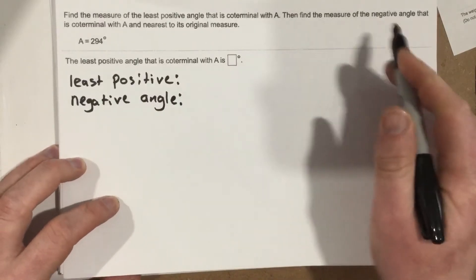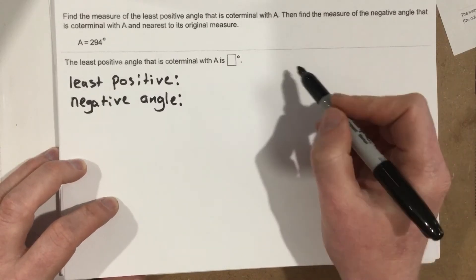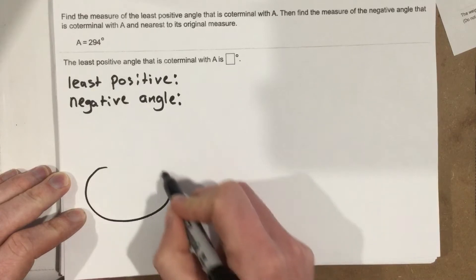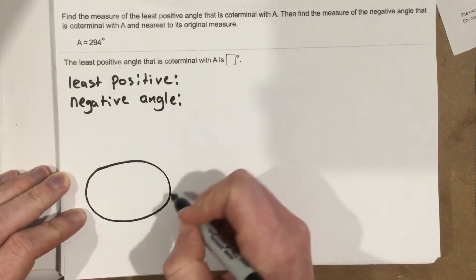First of all, let's talk about what it means to be coterminal. So coterminal, if you're thinking about a circle, let's draw it down here. Coterminal, if you're thinking about a circle, we know that this is 0 degrees.